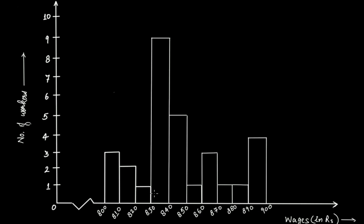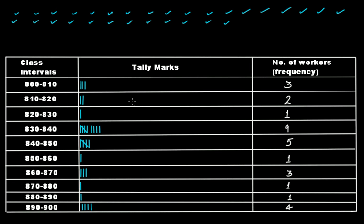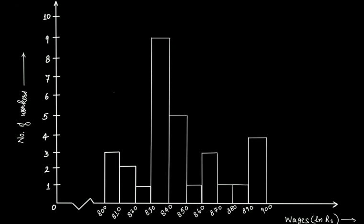We have completed the histogram. You can clearly see that the class interval 830 to 840 has the maximum number of workers, with a bar height of 9 — the highest frequency, also visible in the table. From this histogram we can say 830 to 840 is the modal class. The least frequent intervals — each with only one worker — are 820 to 830, 850 to 860, 870 to 880, and 880 to 890.